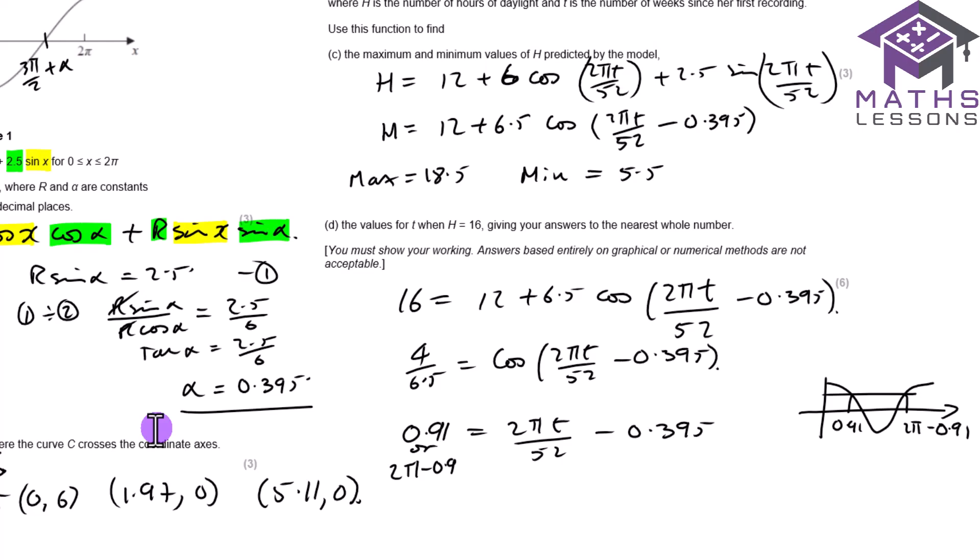And then what we do is we add the 0.395, we times by 52, and we divide by 2 pi. And therefore we get t will equal 10.78, or 47.75. So that's equal to 11 or 48 to the nearest whole number.